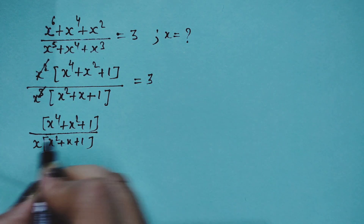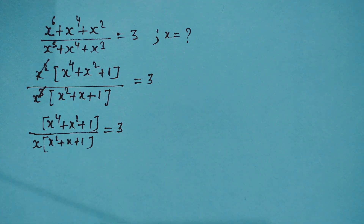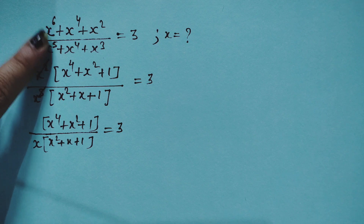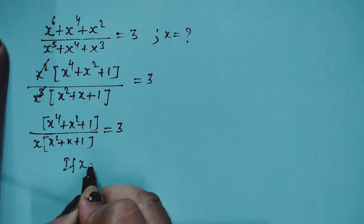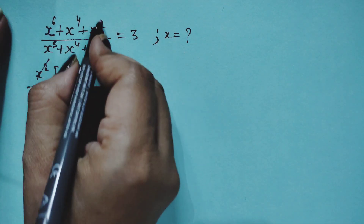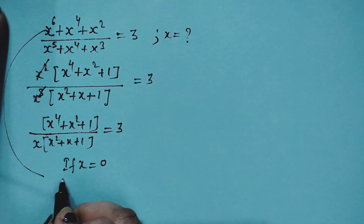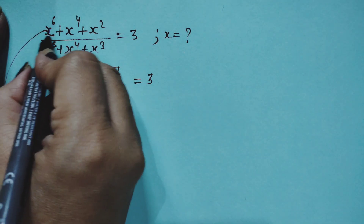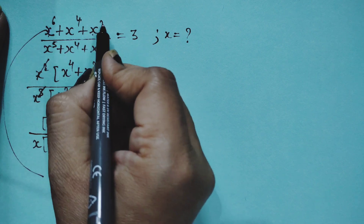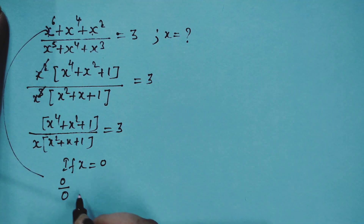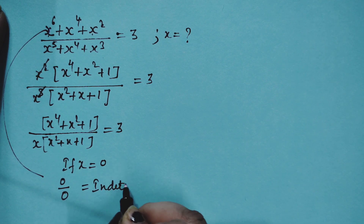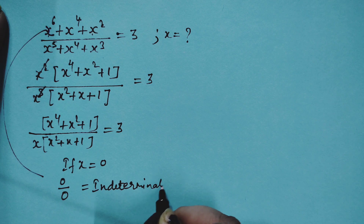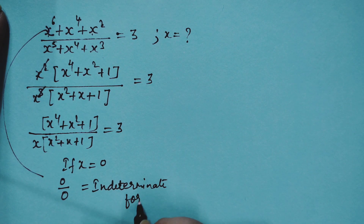Before solving, note that if x = 0, the numerator and denominator are both 0, giving an indeterminate form 0/0, which is not possible. So x ≠ 0, meaning x must have some other value.